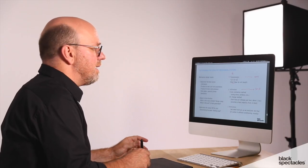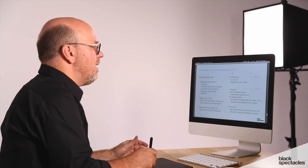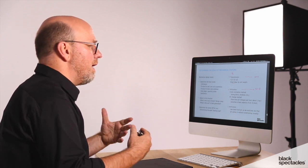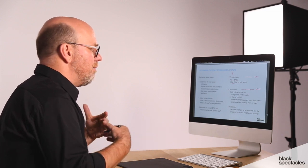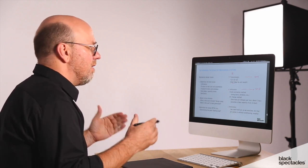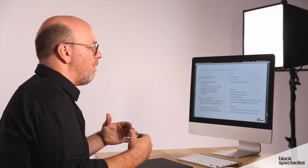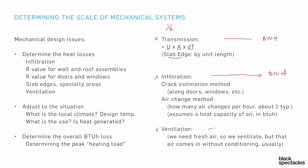We now have a couple of those numbers. We don't always include ventilation — it depends on the situation — but the more we know we'll need fresh air that won't be preconditioned, the more we need to account for that heat loss, which also gives us some BTUH. We add all three individual numbers together to understand our total heat loss per hour — that tells us how much heat the system needs to produce.